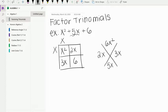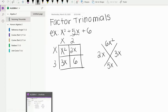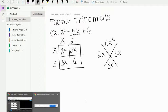X times what will give us 2x? It would be 2. X times what will give us 3x? It would be 3. And then you check by saying, is 2 times 3, 6? And yes, it is. So we would have x plus 2 and x plus 3.